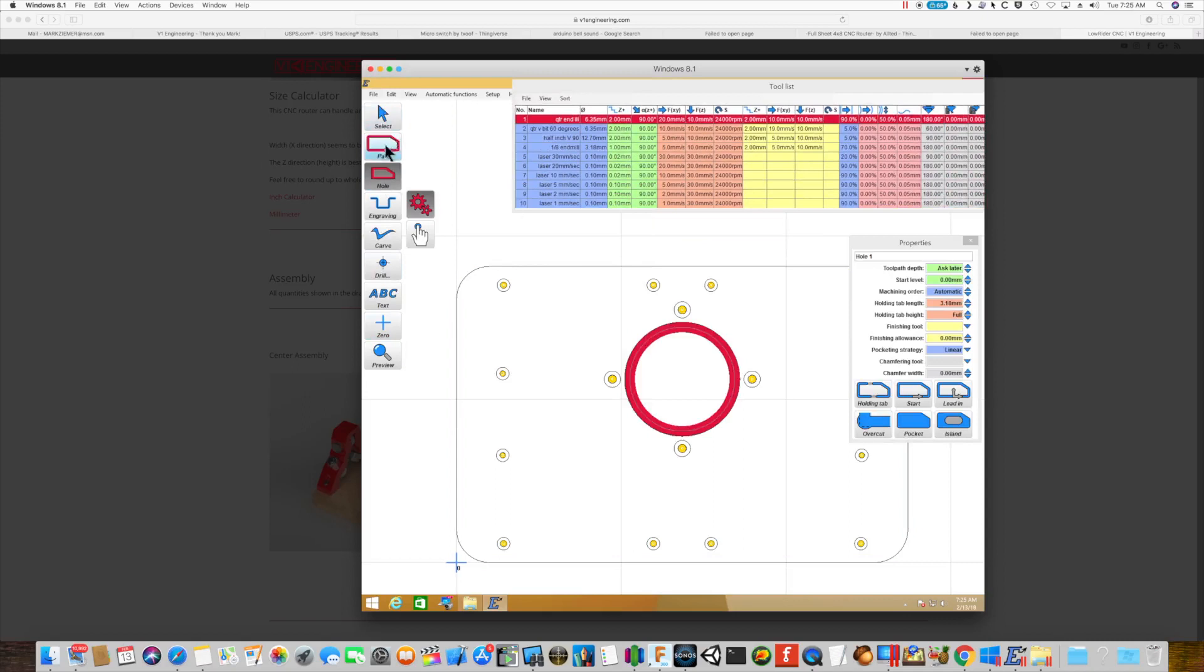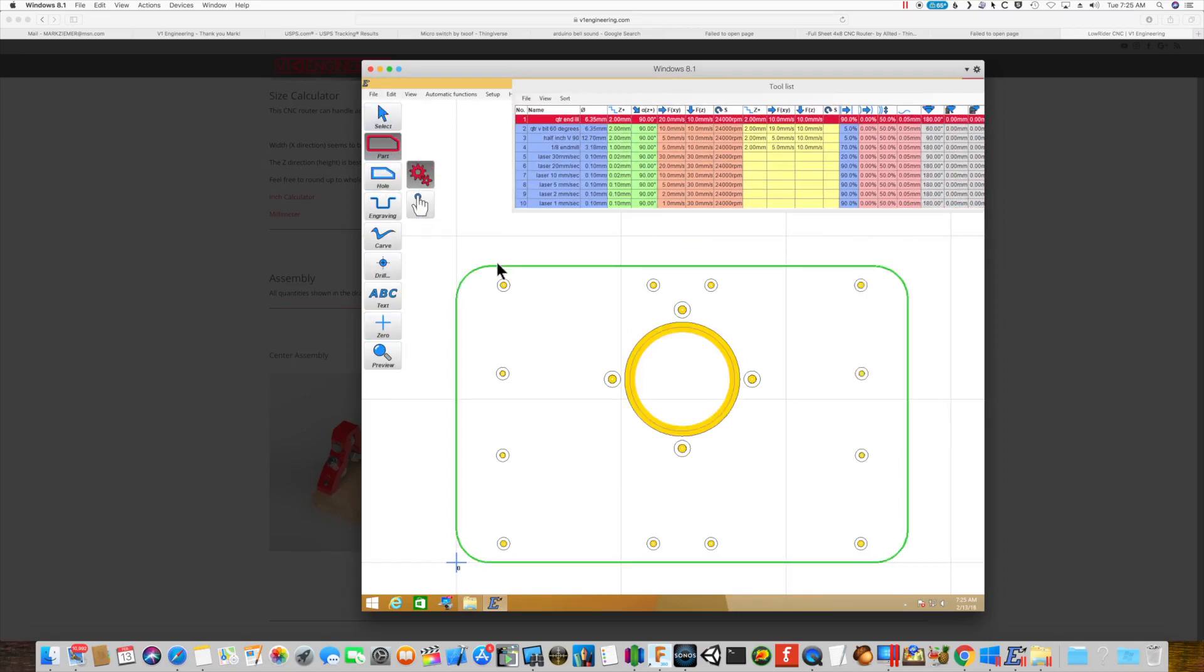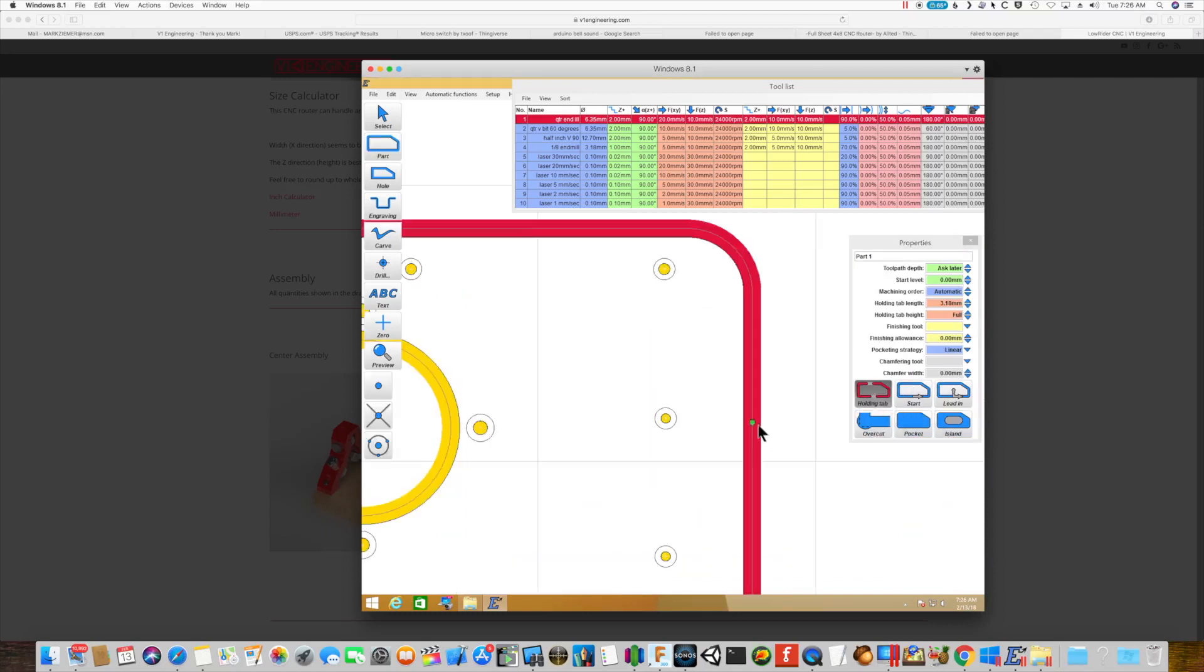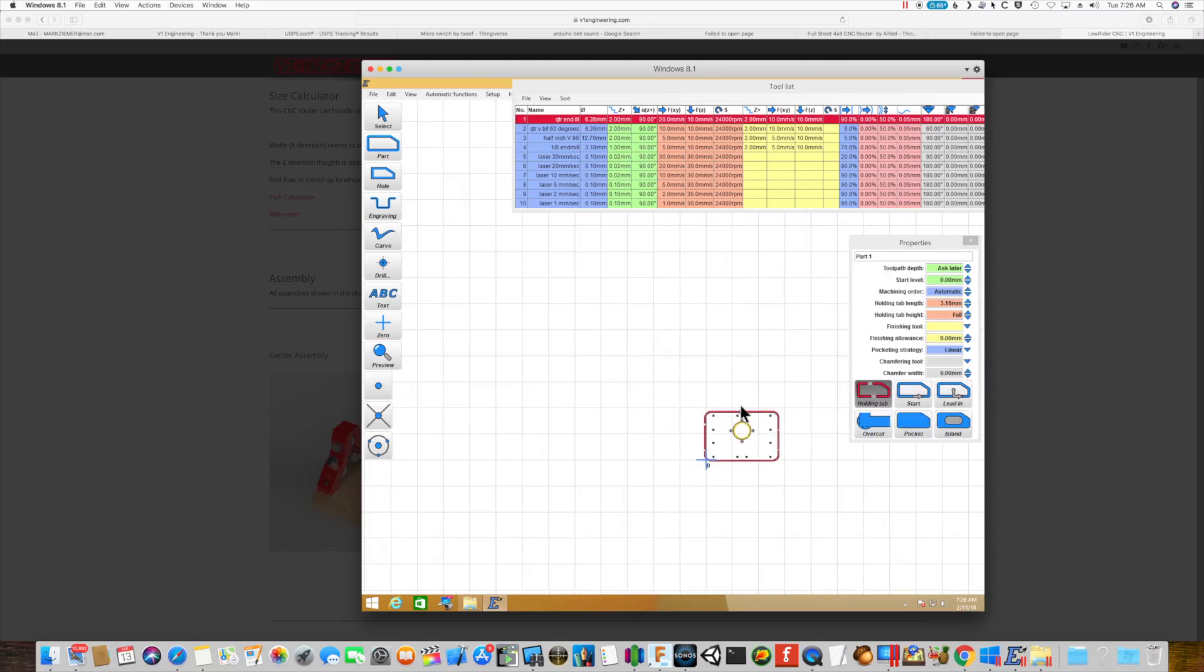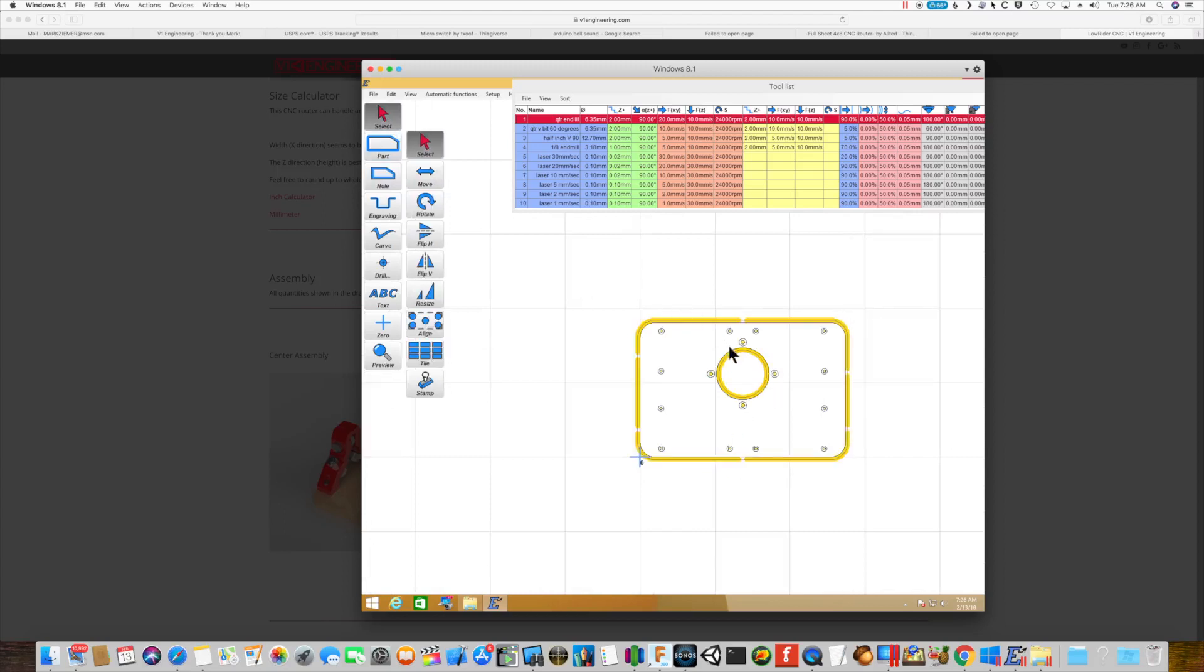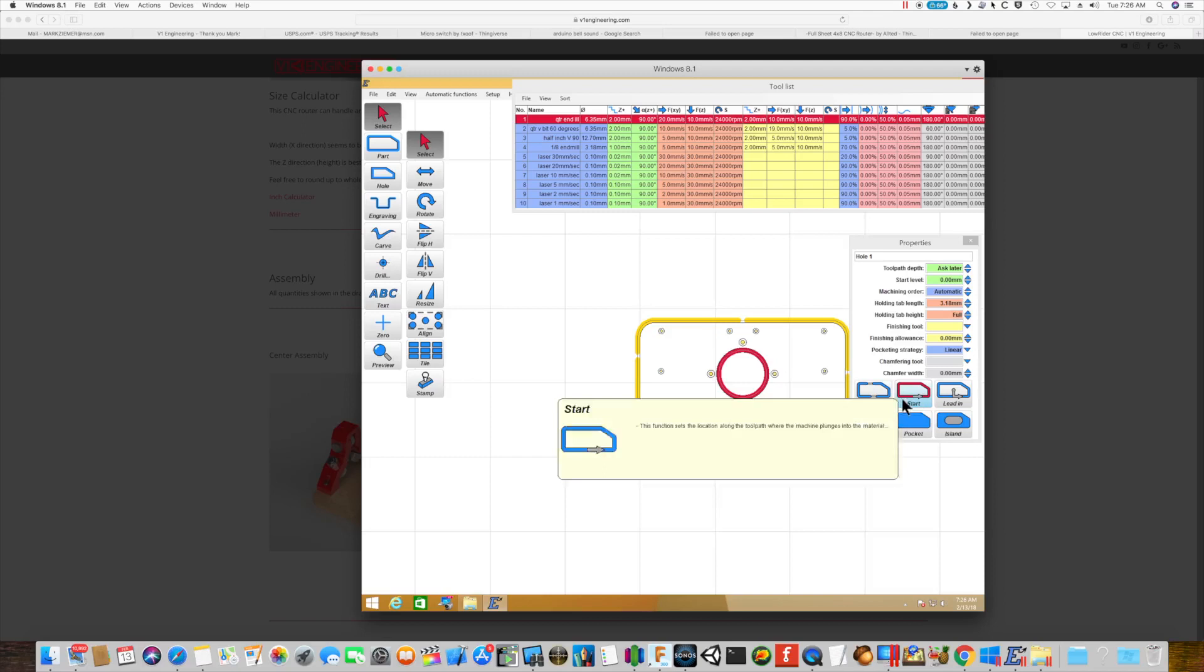And then we're going to pick part for the outer part just like that, and we'll put some holding tabs on those. Let's see, holding tab. All right, let's go back and select this one and put some holding tabs on there too, just so it doesn't come flying out.